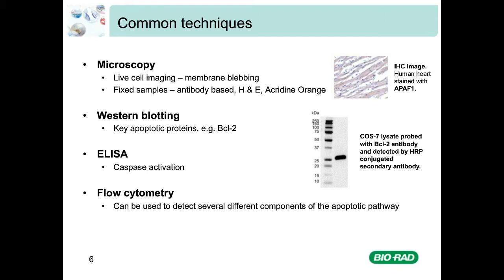Western blotting can be used to look at key apoptotic proteins such as BCL2, and protein activation by detecting phosphorylated proteins. However, a big limitation is that you can only look at one cell population, so studying a particular cell type in a mixed population such as whole blood would require a prior cell sorting step. ELISA can be used to measure parts of the apoptosis pathway such as caspase activation and cytoplasmic nucleosomes released following DNA fragmentation. This assay is high throughput, simple, and gives quantitative data, but again cannot study a single cell type without prior sorting, and can only measure some aspects of the apoptotic process.